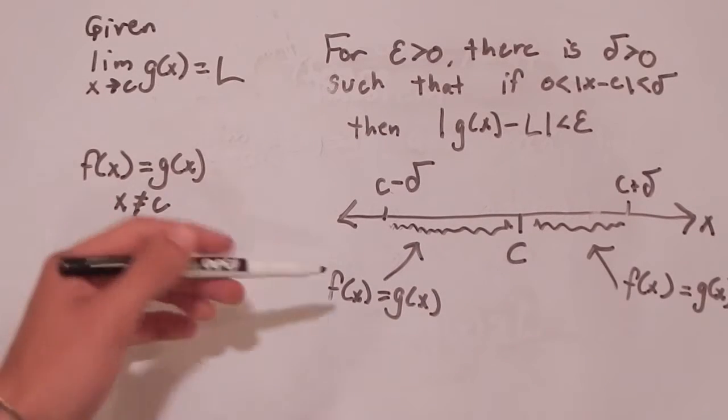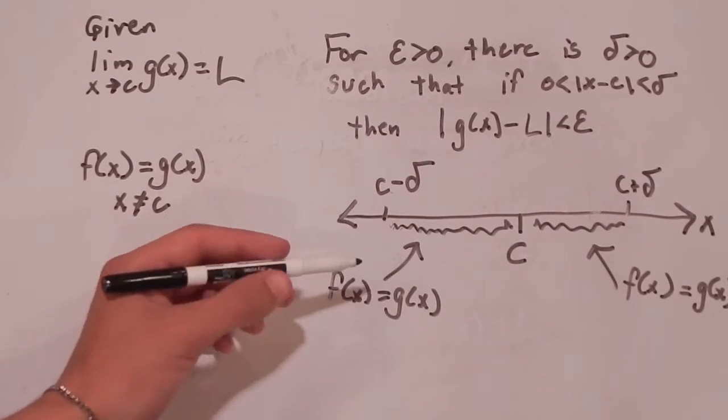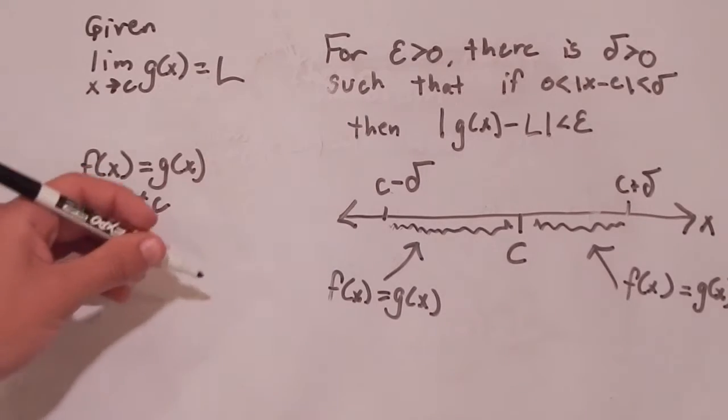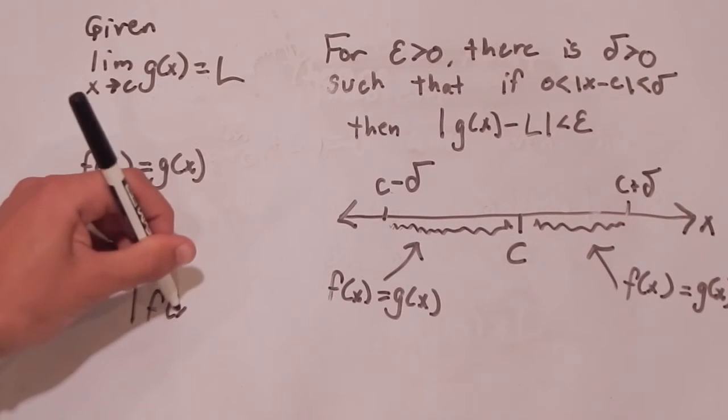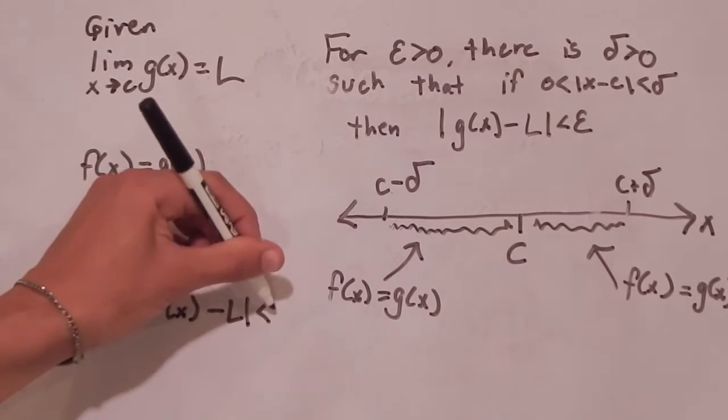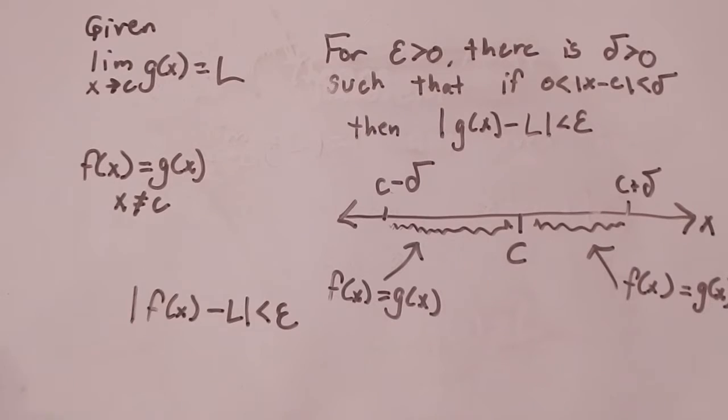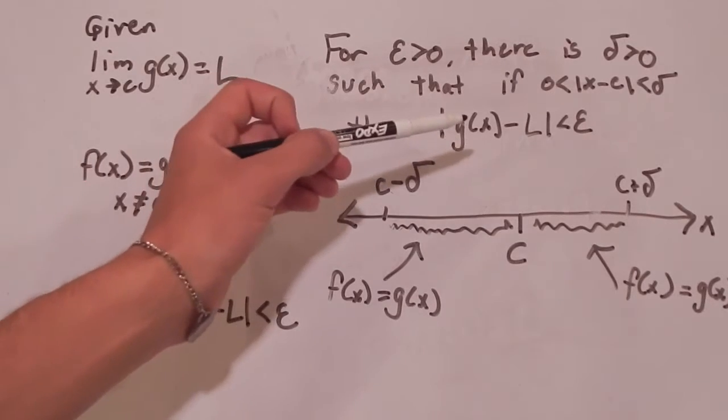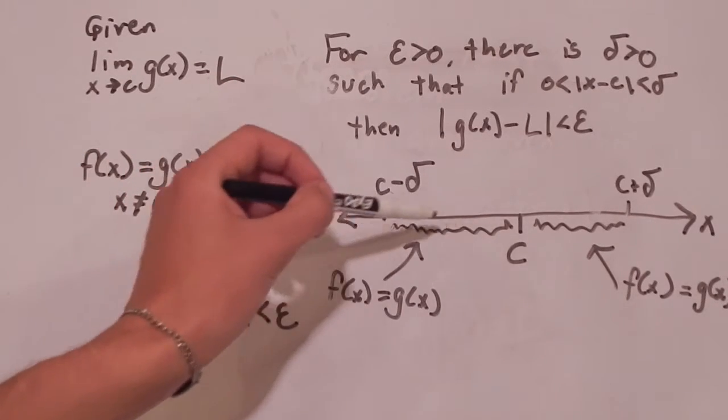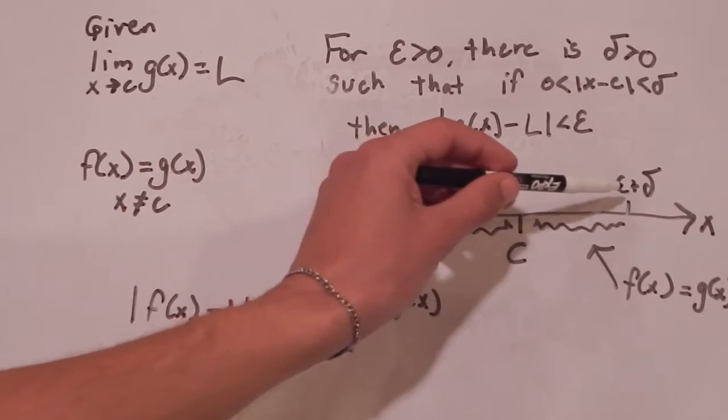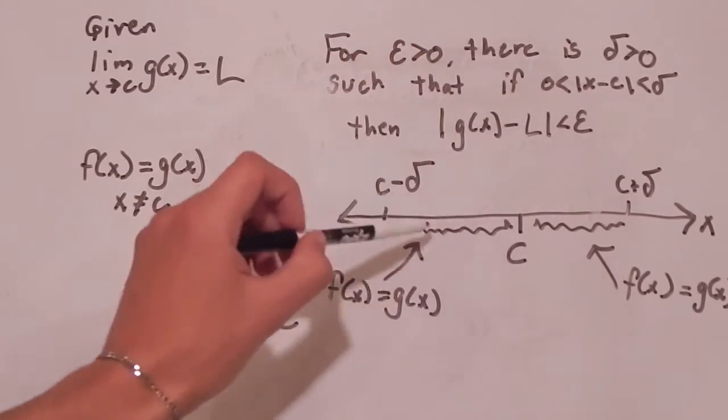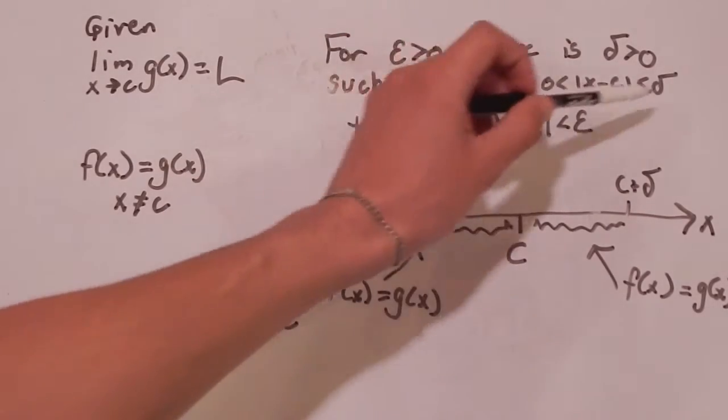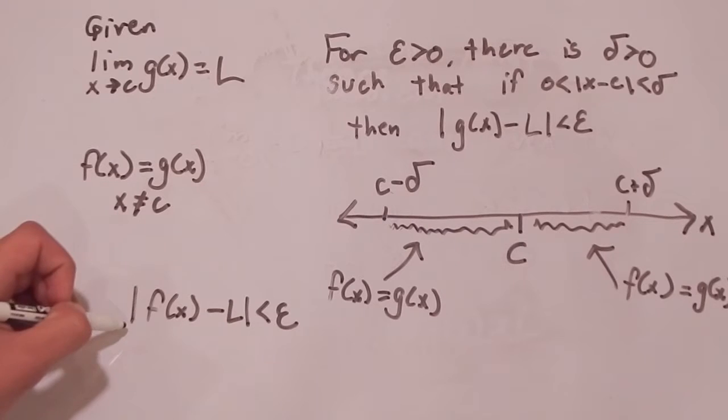So since these two are equal at the X values around C, we can actually plug in F of X for G here. So F of X minus L is less than epsilon. So now for the X values within the interval from C minus delta to C plus delta, except at C. So basically, this inequality, whenever X values fall within this range, whenever this inequality is true, this inequality is also true.